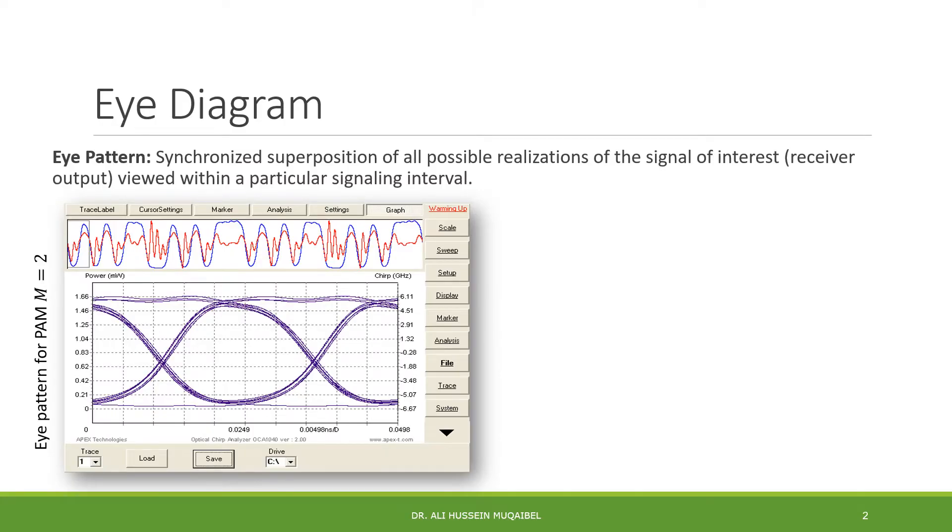What's the eye diagram? The eye diagram is a synchronized superposition of all possible realizations of a signal of interest at the receiver site, at the receiver output, viewed in a particular signal interval. For example, you can see here we have a pulse PAM or pulse amplitude modulation where we have either positive or negative signal. We have the bit duration, and we could be sending one, one, zero, zero, one, zero, one for example, and the sequence continues like this.